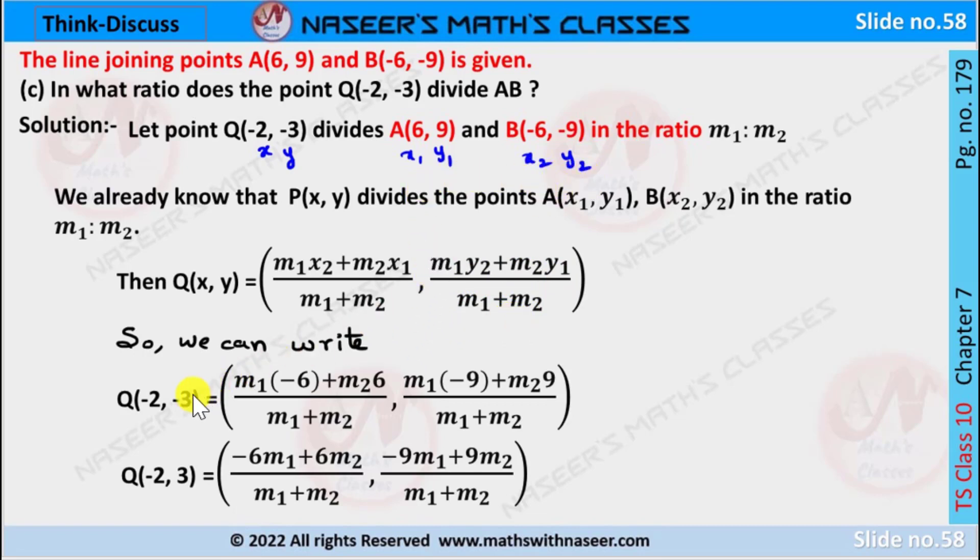Then we can write Q(-2,-3) is equal to m₁(-6) + m₂(6) over m₁ + m₂, comma, m₁(-9) + m₂(9) over m₁ + m₂.